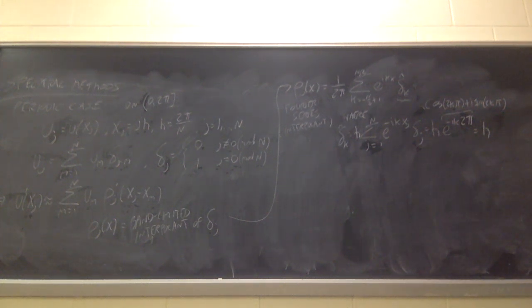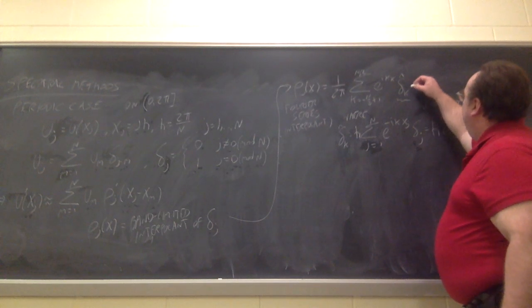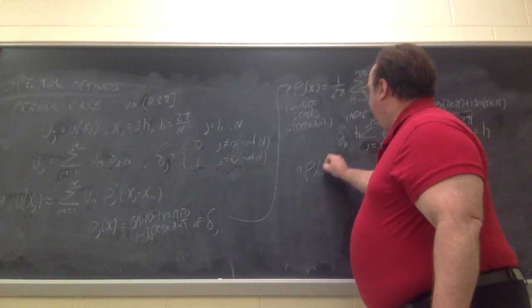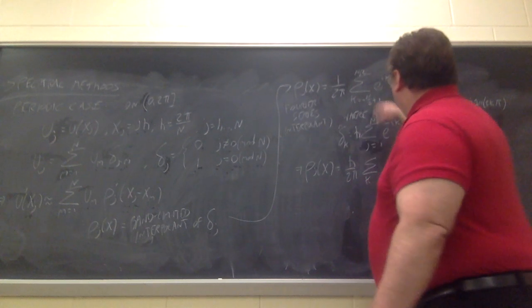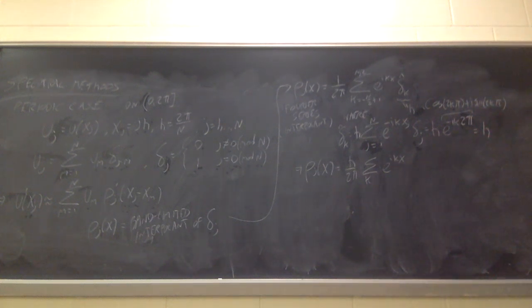That is what I wrote down last time — δ̂_k = h — but my explanation on Monday was flawed because I said it came from plugging in j = 0, which is not part of the sum. So h gets filled in there, and we can write p_j(x) = (h/2π) times the sum over k values of e^{ikx}.